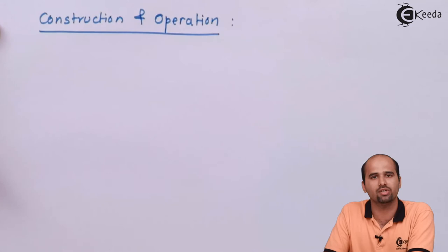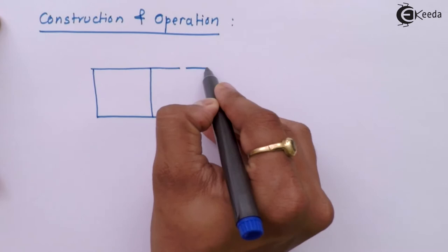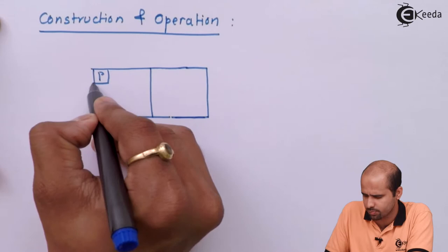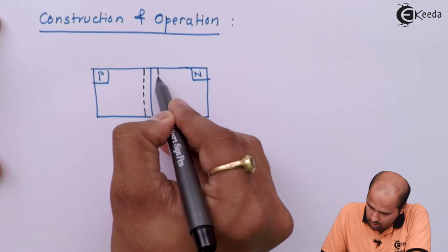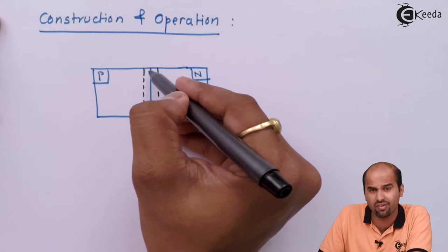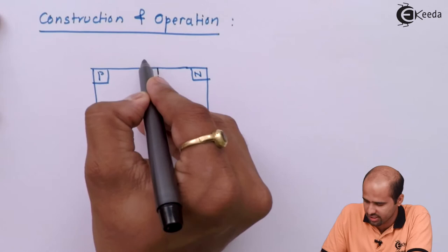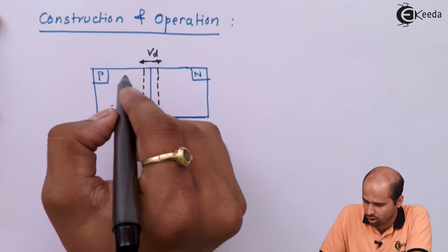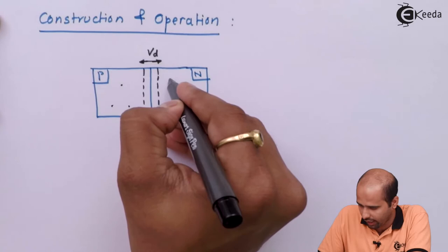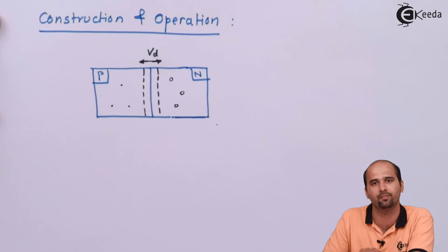Here we will learn the diode structure. This is p-type and this is n-type, but here we keep the junction barrier very very small. This junction barrier is very very small, so whatever resistance is formed due to this barrier is also less, and this potential Vd is also less. What happens is this electron gets accelerated towards the n-region and fills their empty seats. In this particular process we will understand the phenomenon of tunneling.